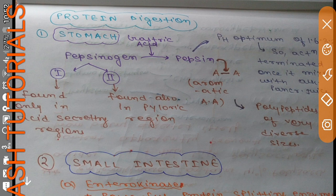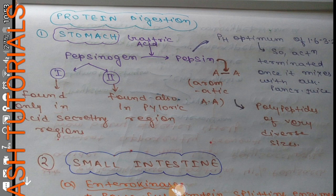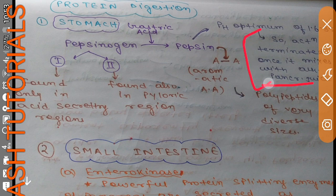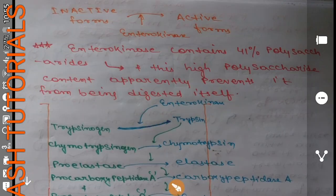The optimum pH for the action of pepsin is 1.6 to 3.2, so its action is terminated once it mixes with pancreatic juice. Pancreatic juice is alkaline and raises the pH to about 6.5. In the duodenum, the pH is about 6.5, so pepsin activity is ceased there.